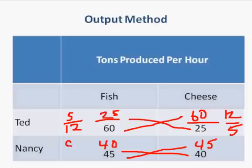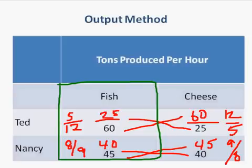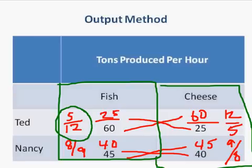Over here we have 8/9ths and 9/8ths. Now all you have to do is look for the lowest opportunity cost in each column, working in columns. 5/12ths is definitely smaller than 8/9ths. Over here, 9/8ths is smaller than 12/5ths. So Ted should produce fish because he only gives up 5/12ths of a cheese, while Nancy should produce cheese because she only gives up 9/8ths of a fish.